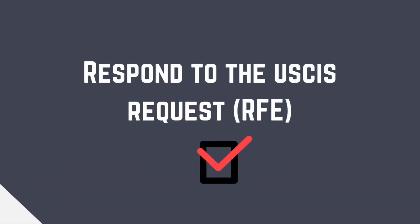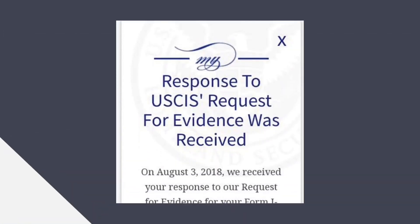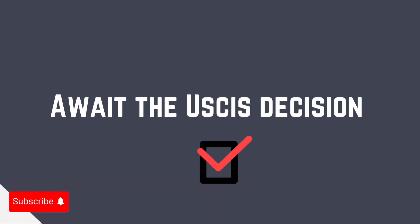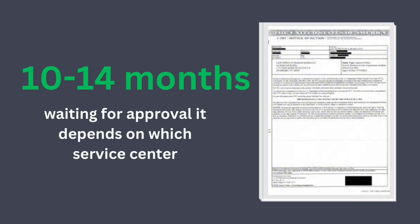Checklist number four: respond to the USCIS request. USCIS may require additional evidence during processing, so you have to respond promptly to avoid delays. Checklist number five: await the USCIS decision. USCIS will review your petition and send a notification of approval or denial. The waiting time is approximately 10 to 14 months, depending on which service center is handling your case. Our application took 10 months until we got approved.